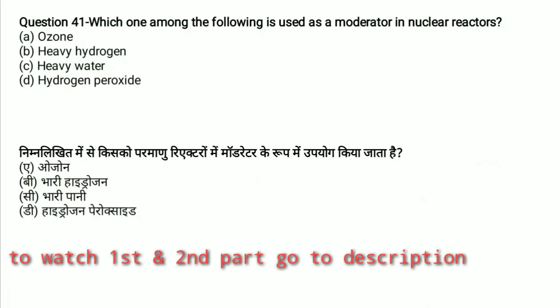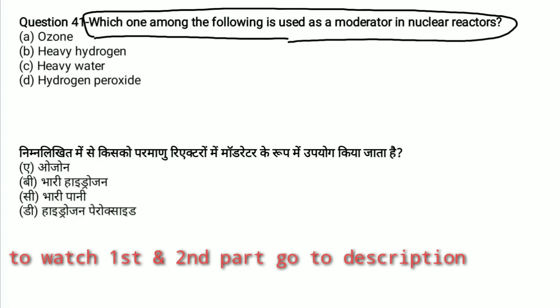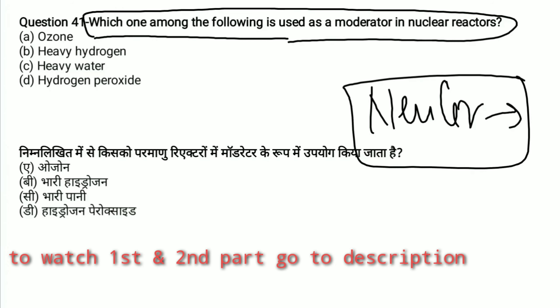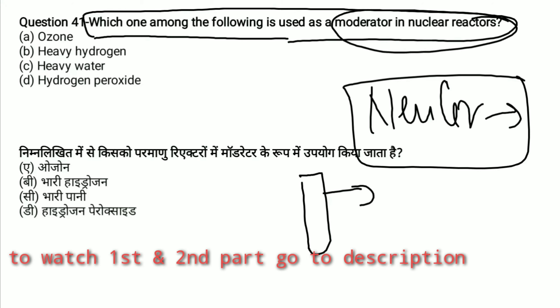Which one of the following is used as a moderator in the nuclear reactor? The nuclear reactor is used for power generation. The control rod controls the reaction, and the moderator is used to slow down the uncontrolled chain reaction.